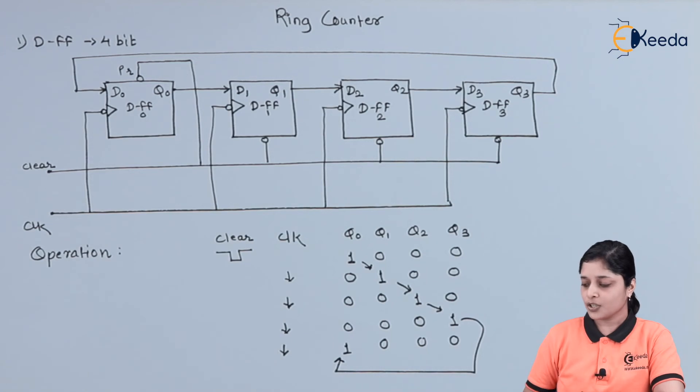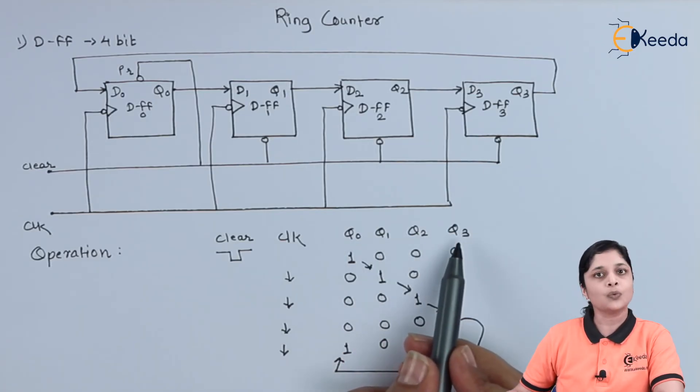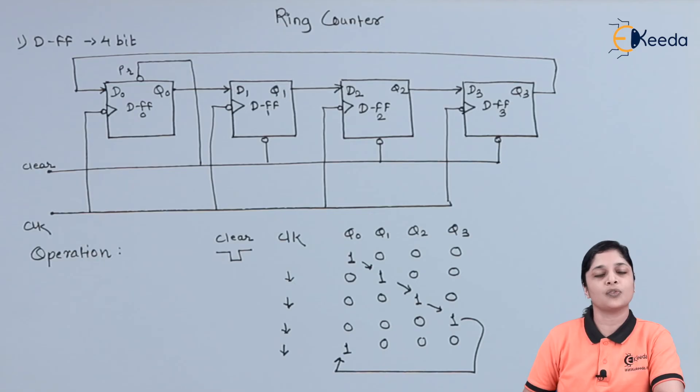This is the operation of ring counter. Considering clear preset terminal, clock signal and Q0, Q1, Q2, Q3 are the outputs of each flip-flop. Specifically, a D flip-flop we have used here. And we have considered here 4-bit ring counter for operation purpose. This is all about the basic operation of ring counter.